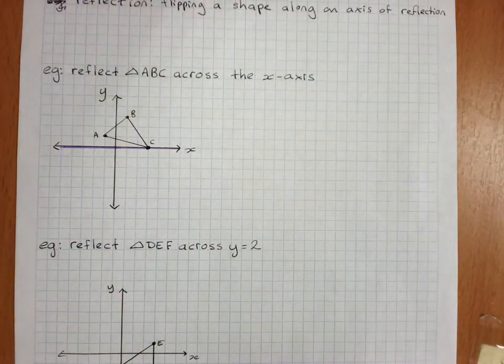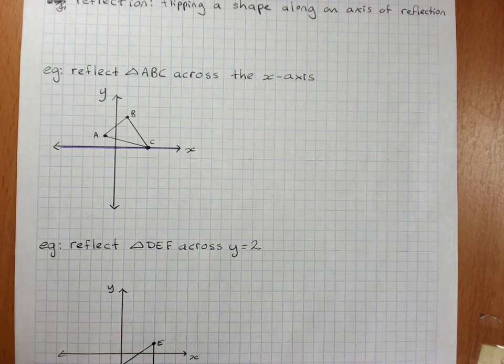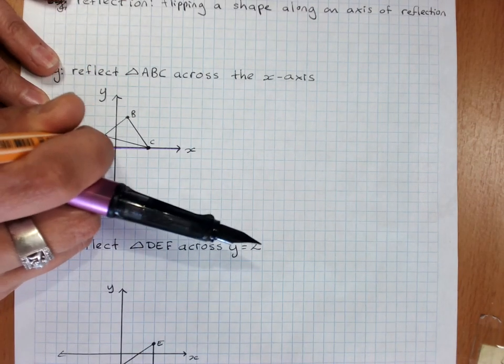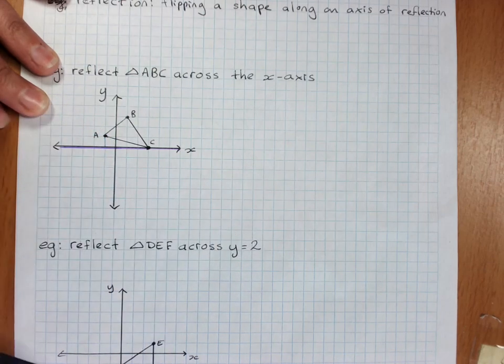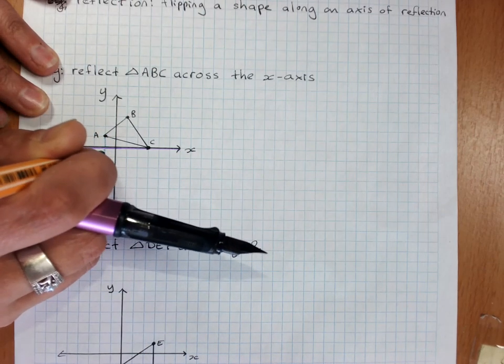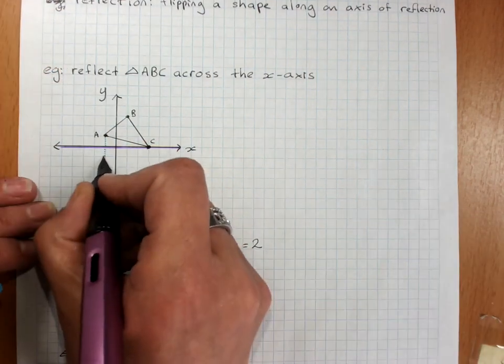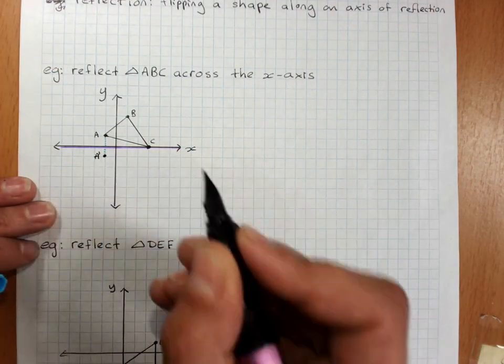So the way that we get these three points reflected is for each point that's not on the mirror, we take the point directly to the mirror, and then exactly the same distance directly out the other side, and that's our new A.